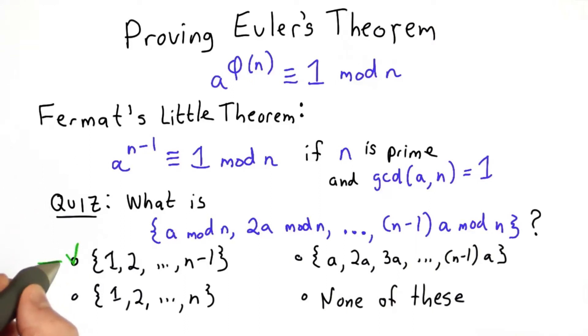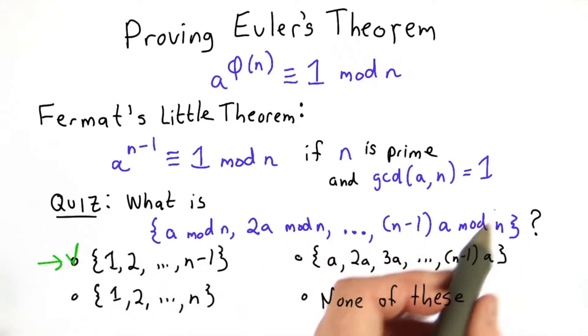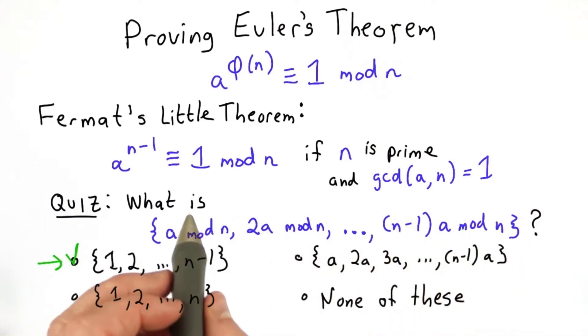The answer is the first choice. And we know this is the case because this set has n minus 1 elements. We also know that there are no duplicates in this set because we know that n is prime and a is not divisible by n.